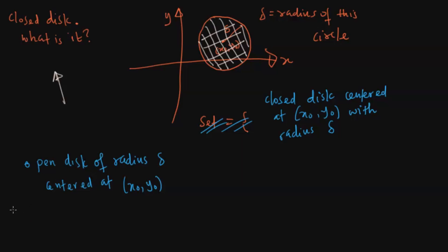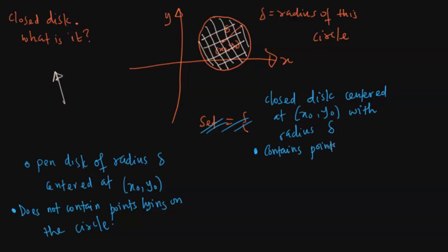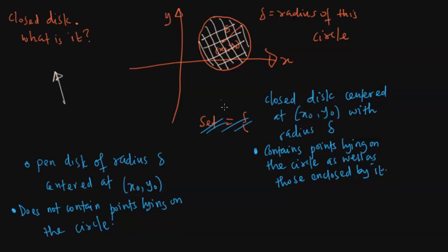The difference is that the open disc does not contain the points lying on the circle — only the ones inside the circle. But the closed disc contains the points lying on the circle, as well as those enclosed by it. So essentially, if you find the intersection of these two sets you would only be getting the points inside the circle, which would only be the open disc. That's the major difference between the open disc and the closed disc.